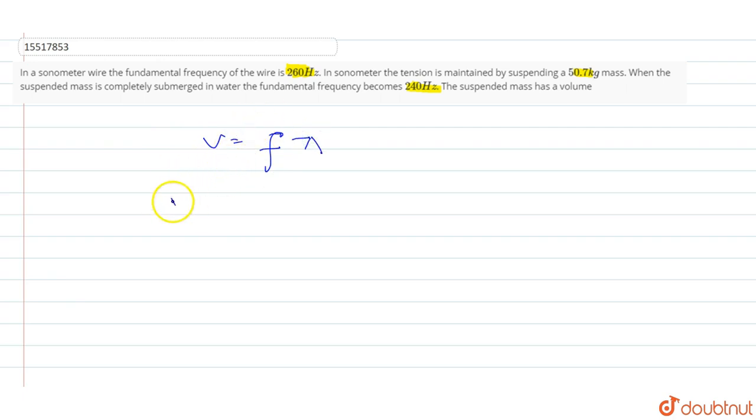In the first case, v1 is equal to f1 lambda. Because lambda is the same, v2 is equal to f2 into lambda. If I divide it, then f1 by f2 is equal to v1 upon v2. And v1 upon v2 is equal to the square root of T1 upon T2.